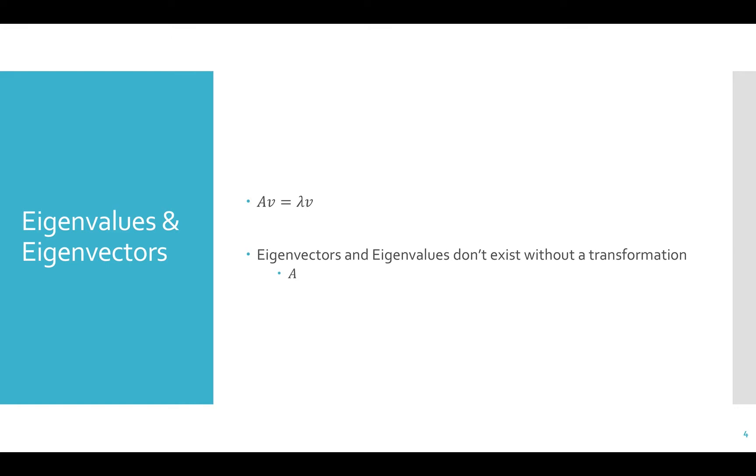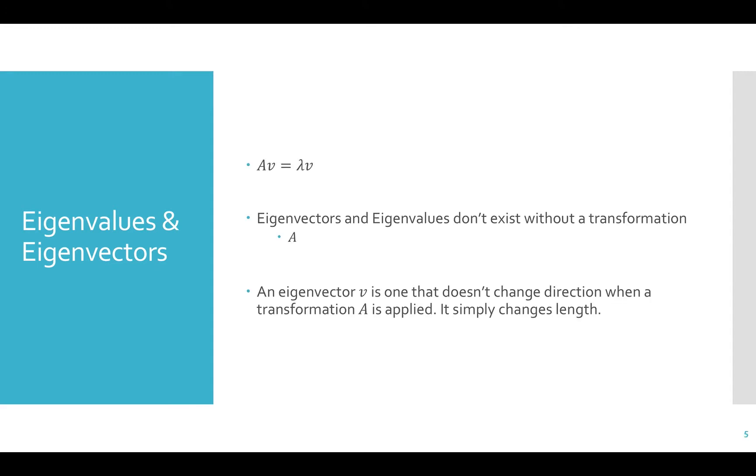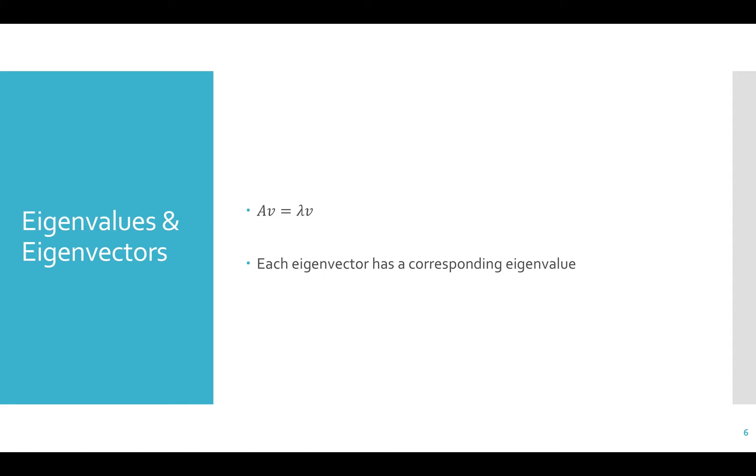Remember, eigenvectors and eigenvalues do not exist without a transformation or a matrix A. An eigenvector V is one that doesn't change direction when the transformation A is applied. It simply changes length. Each eigenvector has a corresponding eigenvalue. How do we calculate eigenvectors and eigenvalues?